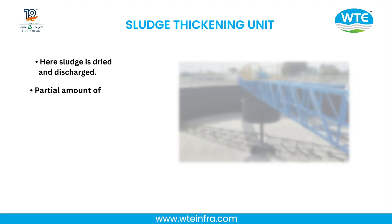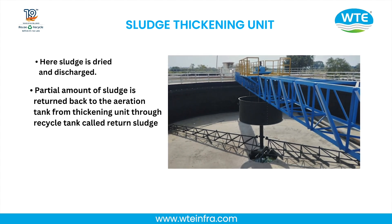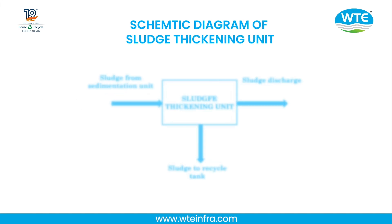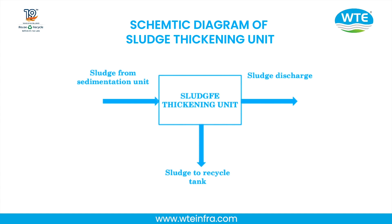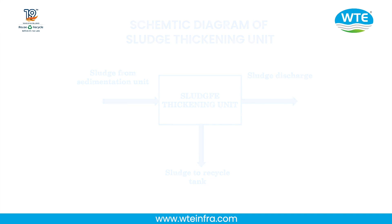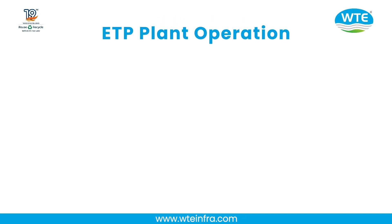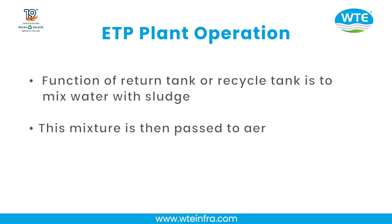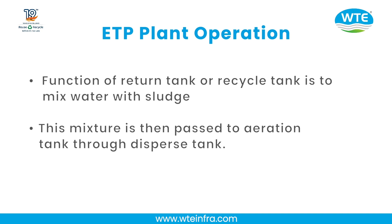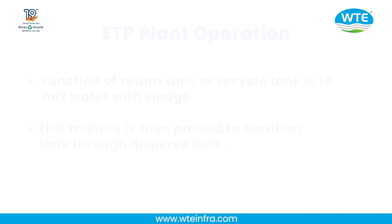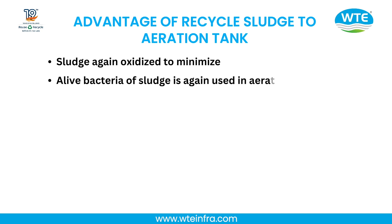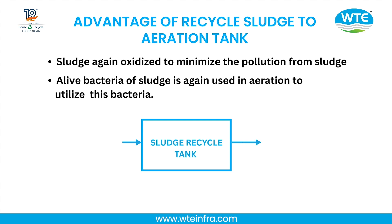Sludge Thickening: A partial amount of sludge is returned back to the aeration tank from the thickening unit through the recycle tank (written sludge tank) and dispersed tank. The function of the recycle tank is to mix water with sludge; this mixture is then passed to the aeration tank through the dispersed tank. Advantages of recycled sludge: sludge is again oxidized to minimize pollution, and live bacteria from the sludge are reused in the aeration tank.